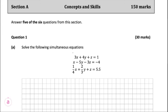Today we're going to be looking at the 2021 mock paper. This is paper one, question one. It's asking us to solve the following simultaneous equations. The first thing we're going to do is label each equation: equation one, equation two, and equation three.